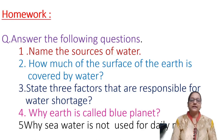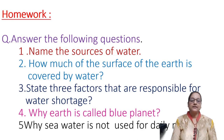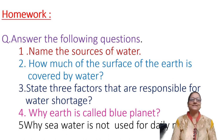Question number one: Name the sources of water. Number two: How much of the surface of the Earth is covered by water? Question three: State three factors that are responsible for water shortage. Number four: Why is Earth called the Blue Planet? And number five: Why is sea water not used for daily needs? These are simple questions with simple answers — you will find them all on the first page.